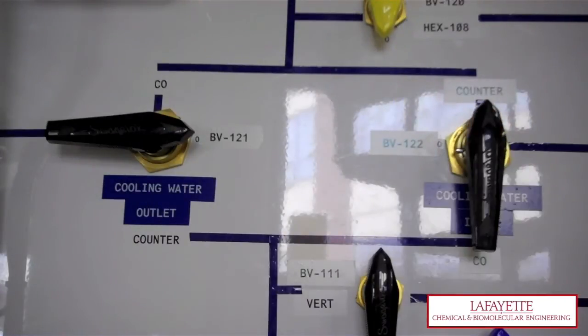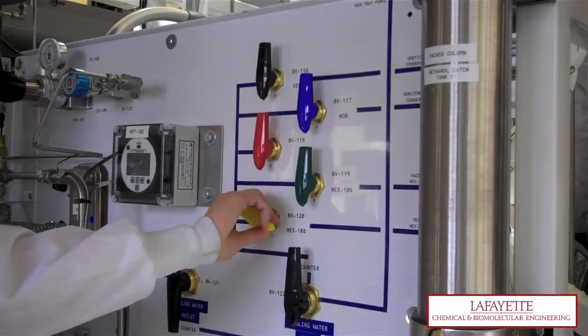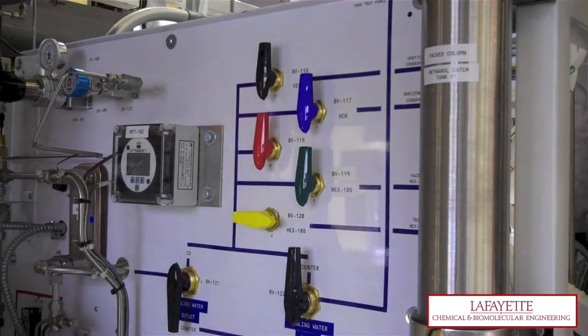On the back panel, turn BV122 to the counter-current position and open BV120, which sends cooling water to the distillate product heat exchanger HEX108.